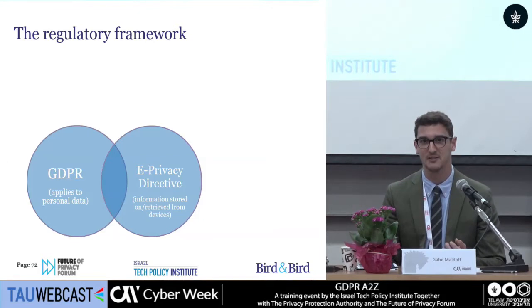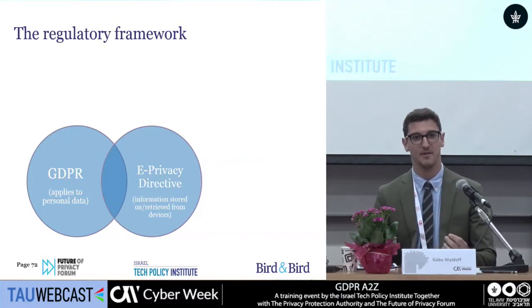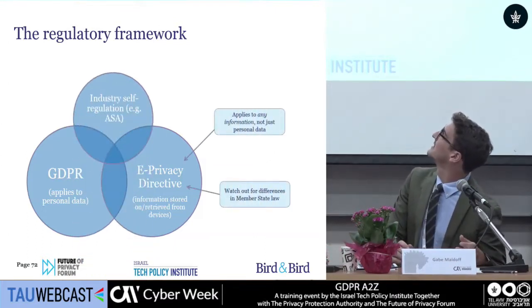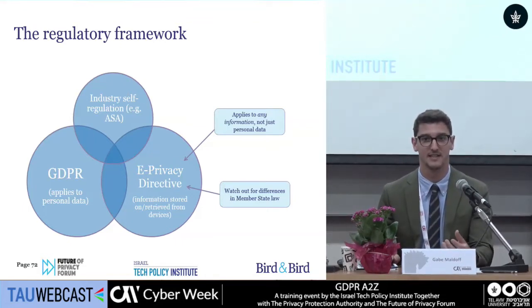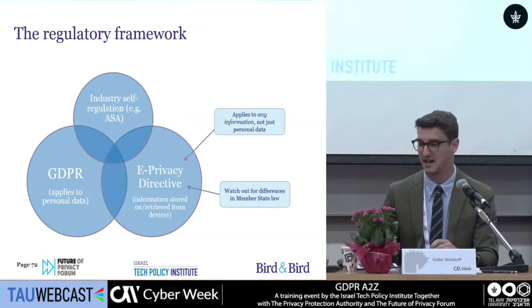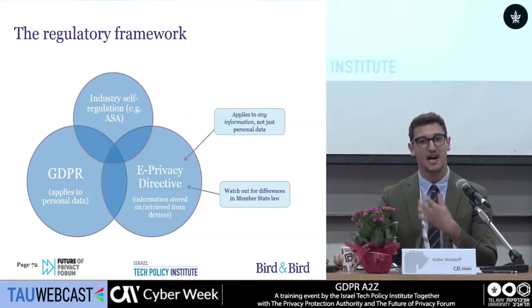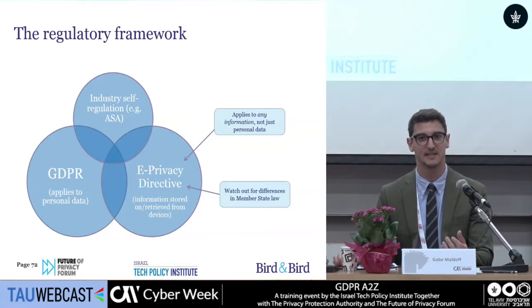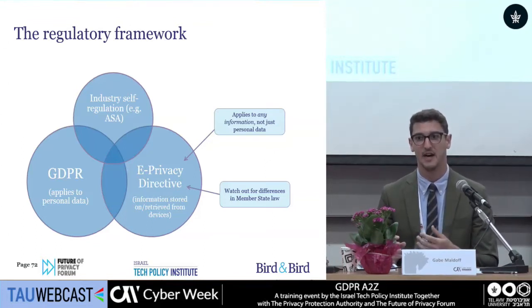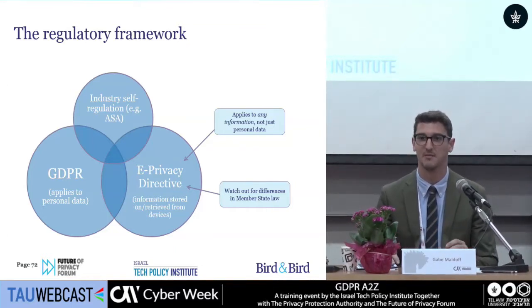The e-privacy directive dates back to 2002 and has been amended since. It applies not to personal data but to any information collected from an individual's device, and also to storing information on an individual's device. Cookies are clearly stored on a user's device, but also accessing information from someone's device — such as their advertising ID — is going to trigger this e-privacy directive. There are also standards organizations in the advertising space that apply self-regulatory rules, which can limit what you're able to do.